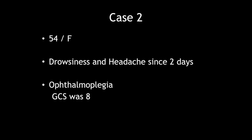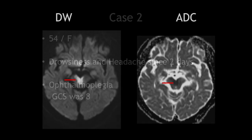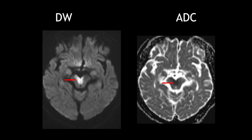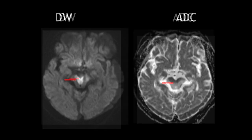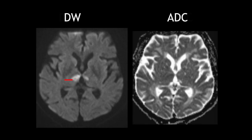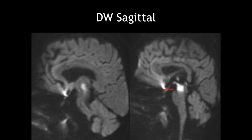This was a 54-year-old female who came with drowsiness and headache since two days. On examination she had ophthalmoplegia and her GCS was 8. MRI of the brain showed restricted diffusion in the rostral midbrain as well as in bilateral paramedian thalami, appearing bright on diffusion-weighted images and dark on corresponding ADC maps. Sagittal diffusion-weighted images confirmed restricted diffusion in the paramedian thalami and rostral midbrain.